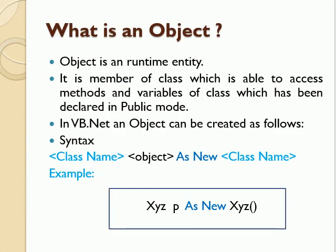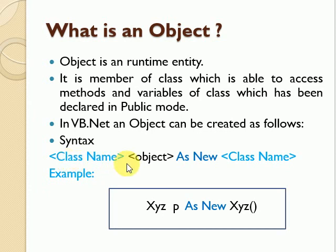Now we discuss another concept of OOPs — the object. An object is a runtime entity. It is a member of a class which is able to access the methods and variables of the class that have been declared as public. In VB.net, an object is created with the syntax: class name, then name of object, as new, then class name. Here, new is a keyword used for creating an object. For example, with class XYZ, P is the name of the object — as new XYZ — meaning we have created the object P.